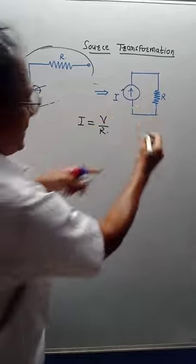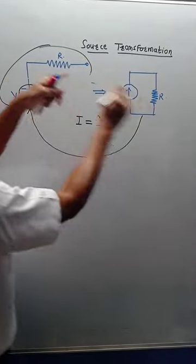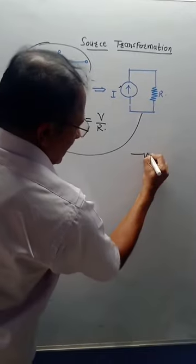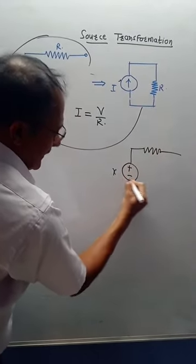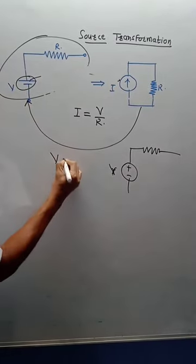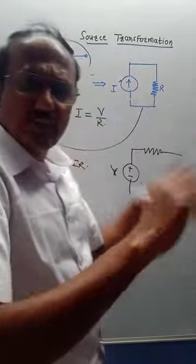If a current source is given in parallel with resistance, you can convert it into a voltage source. How to do it? Draw the resistor in series with the voltage source. To calculate the value of the voltage source, use V = I × R. This is the way you can transform one source into another.